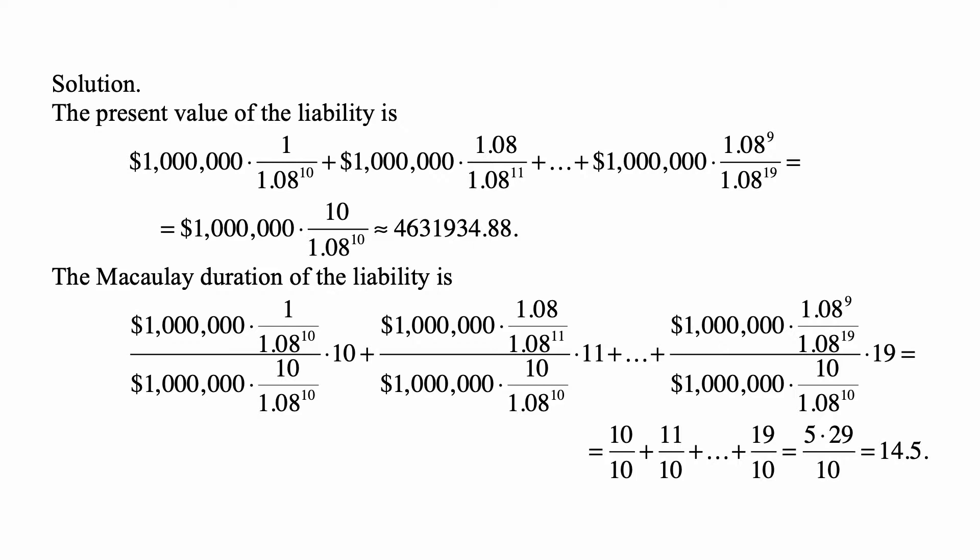The Macaulay duration of the liability is 1 million times 1.08 to the negative tenth, so divided by 1.08 to the tenth, divided by what we just calculated to be the total present value of all payments, which is a million times 10 over 1.08 to the tenth, and that's multiplied by the time of payment, which is 10, plus the second payment.